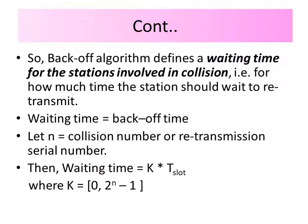The backoff algorithm defines the waiting time for stations involved in a collision — that is, how long a station should wait before retransmitting. The waiting time equals the backoff time. Let N equal the collision number or retransmission serial number. Then the waiting time is calculated as K × T_slot, where K is a random integer from the contention window ranging from 0 to 2^N − 1.